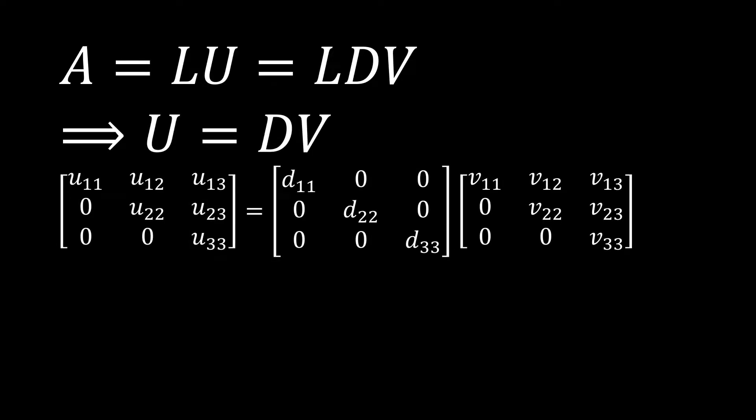So, this tells us that the U matrix, or the upper triangular matrix, must be equivalent to DV. Now, I know what you might be asking. Can't we just make this diagonal matrix the identity matrix? And while we certainly could, and then this V matrix would be equivalent to our upper triangular matrix, that's not particularly useful.